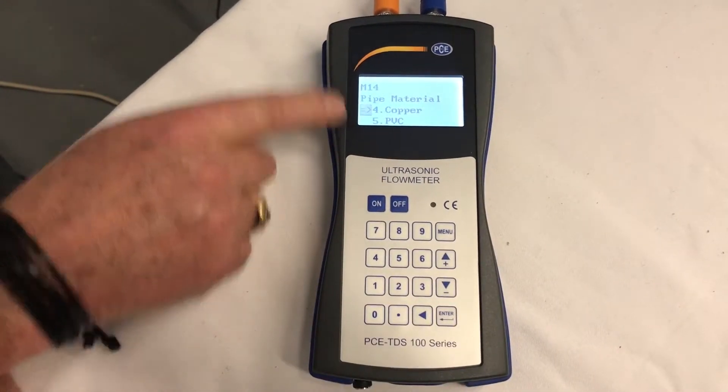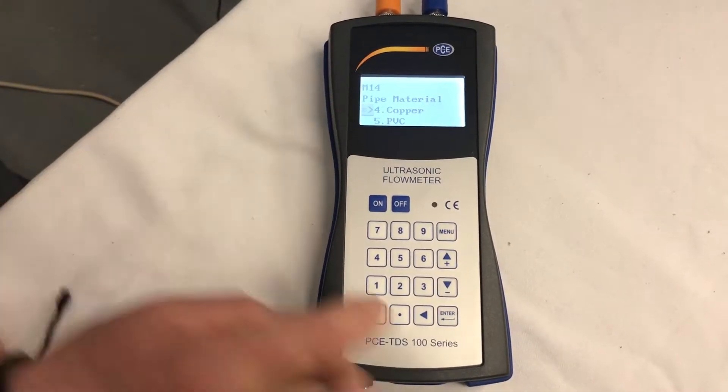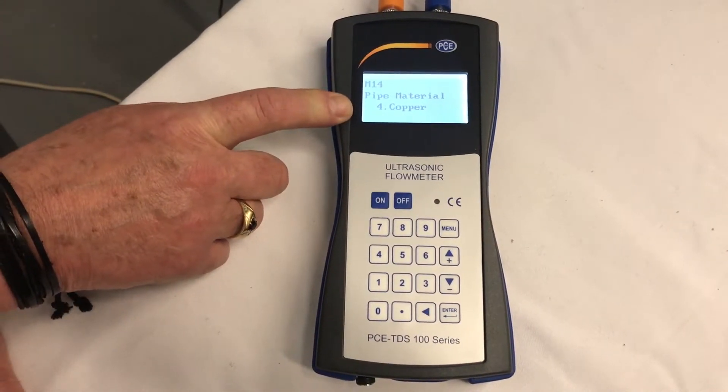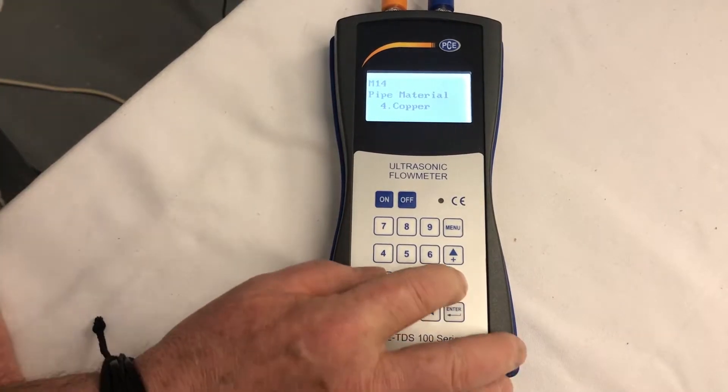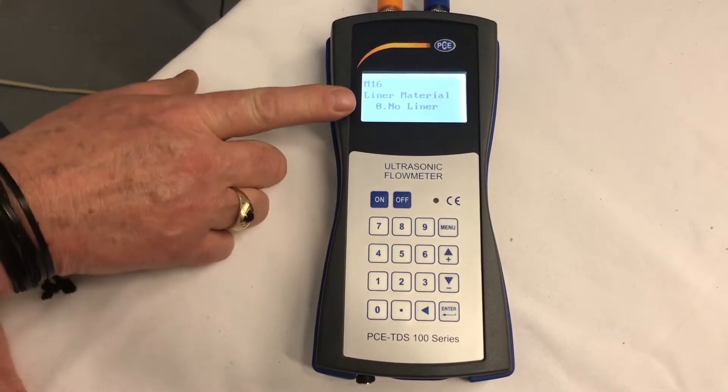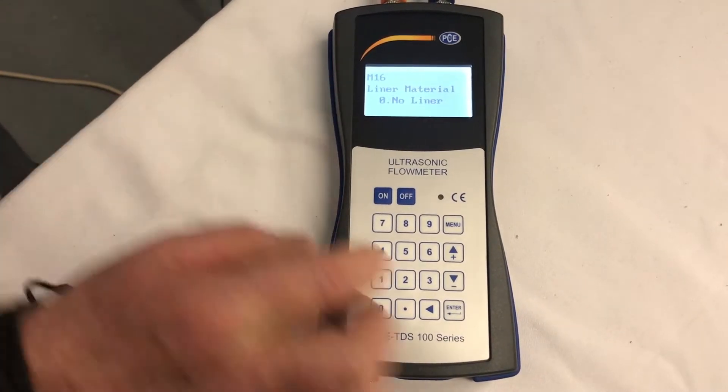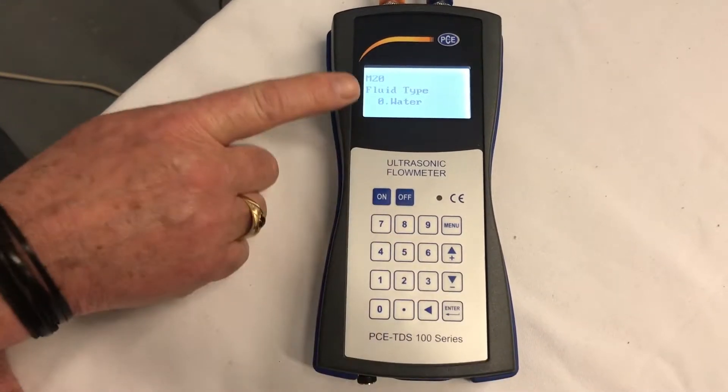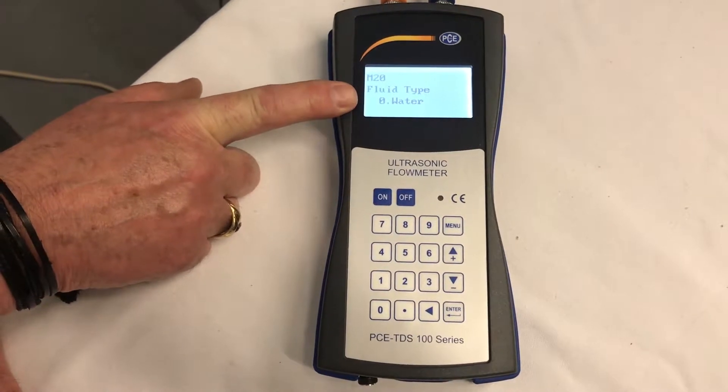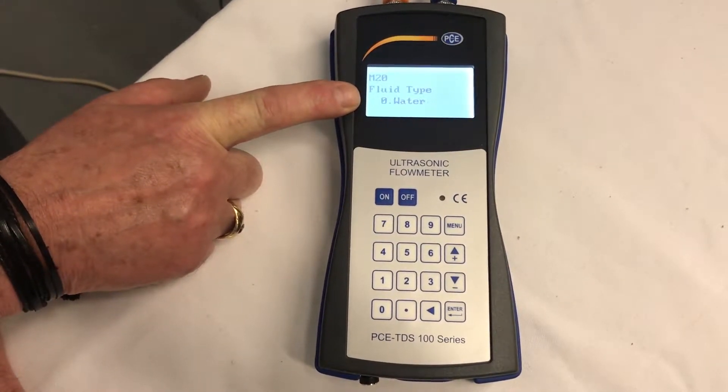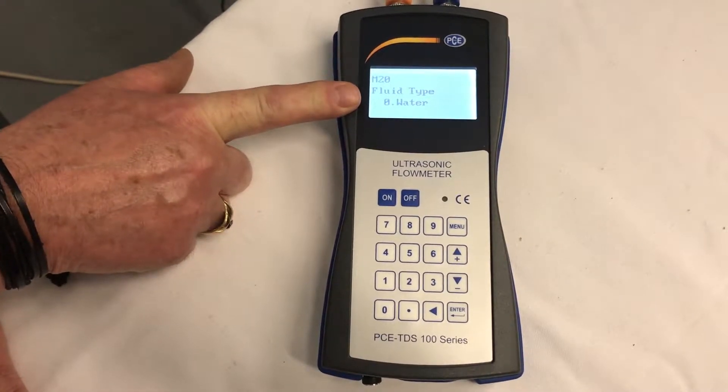So that's what we want, not PVC this time, it's copper. So enter copper, it's in. Now we're going to go to M16, which is liner. There is no liner in the copper pipe. Then we go to the liquid, M20. We have water flowing through our pipes or our tubes, copper tube. So we want to make sure it says zero for water.